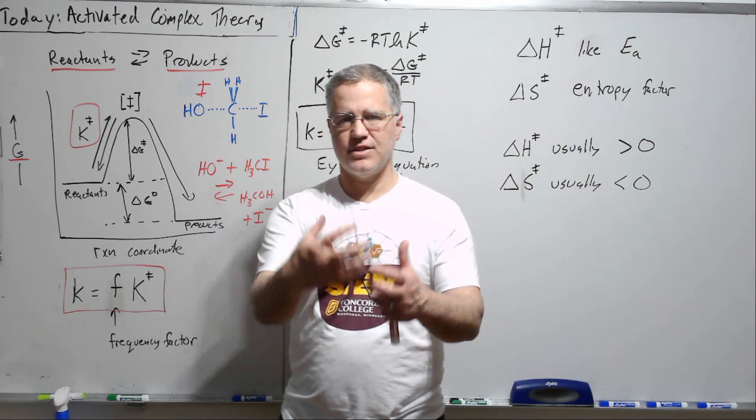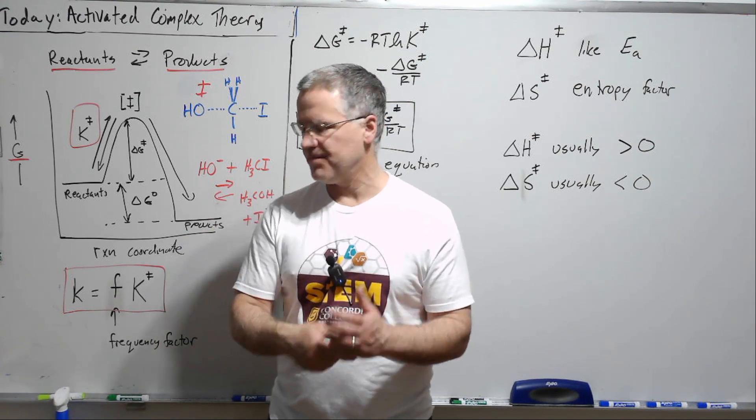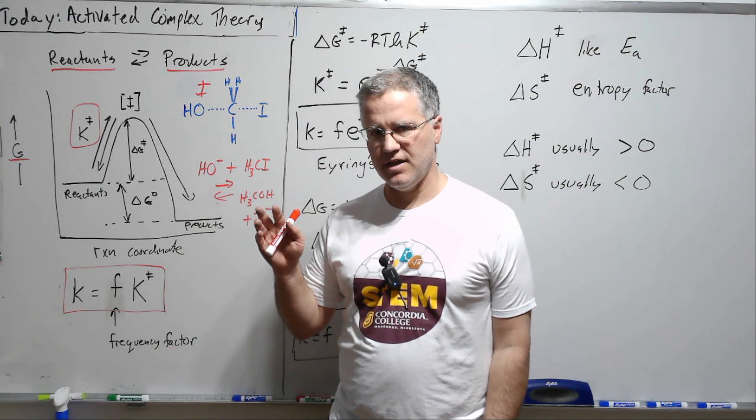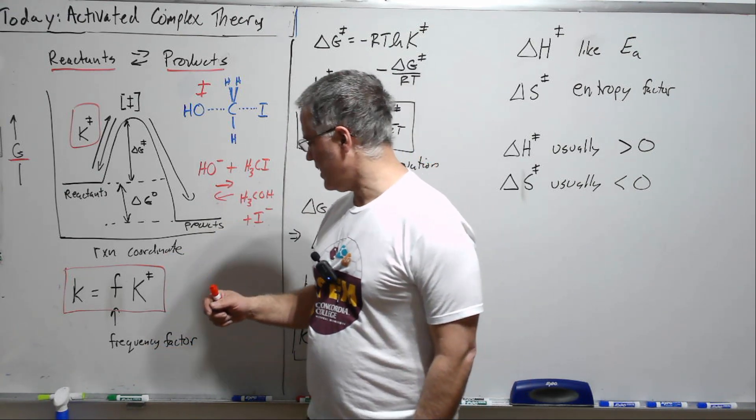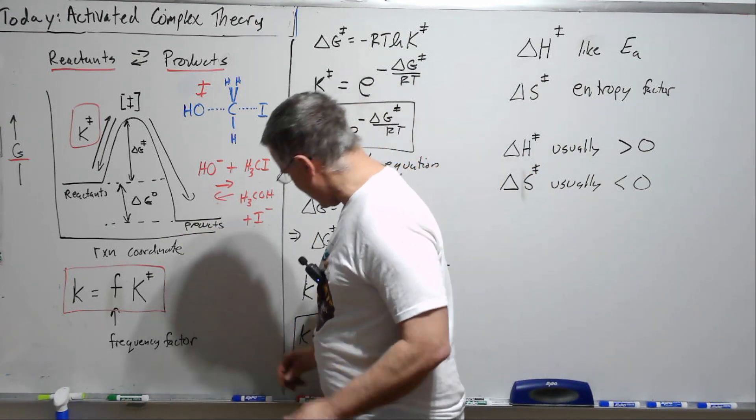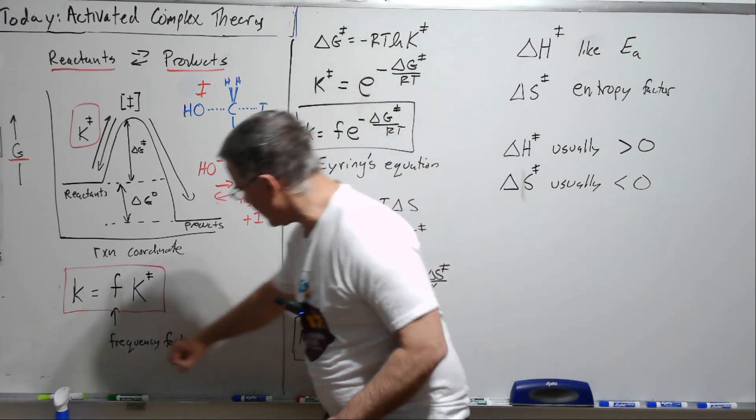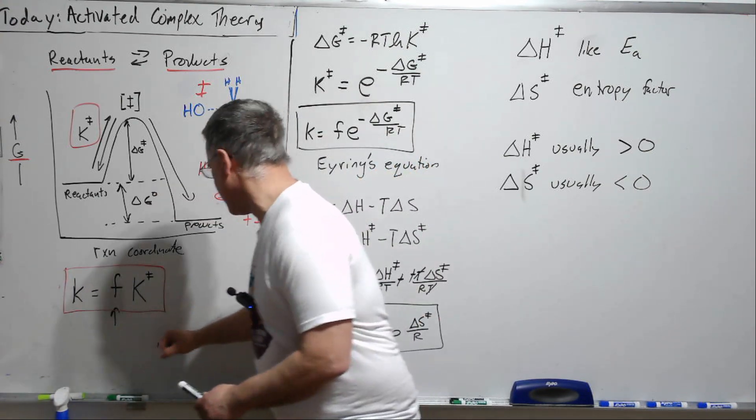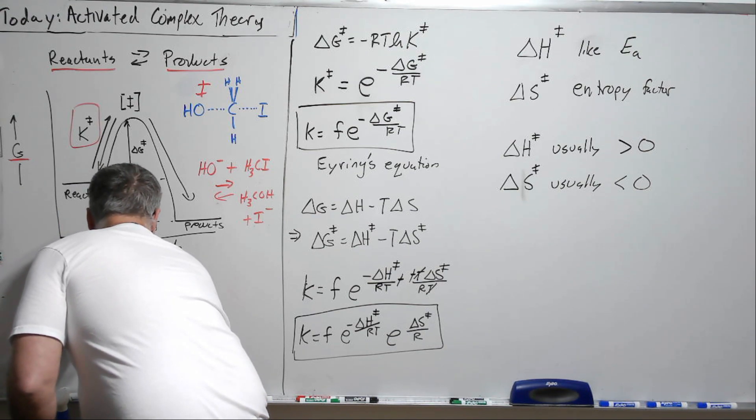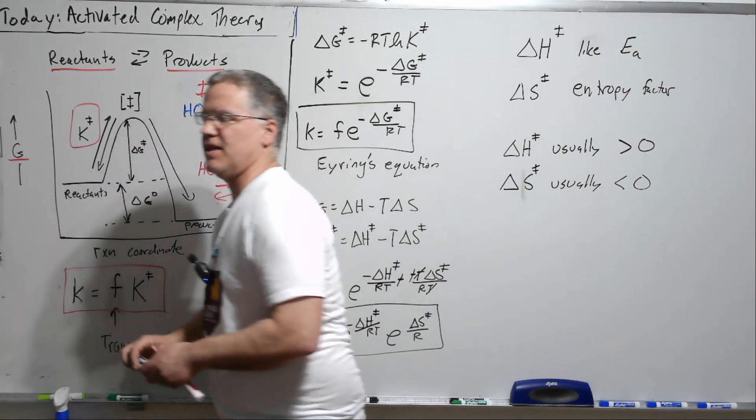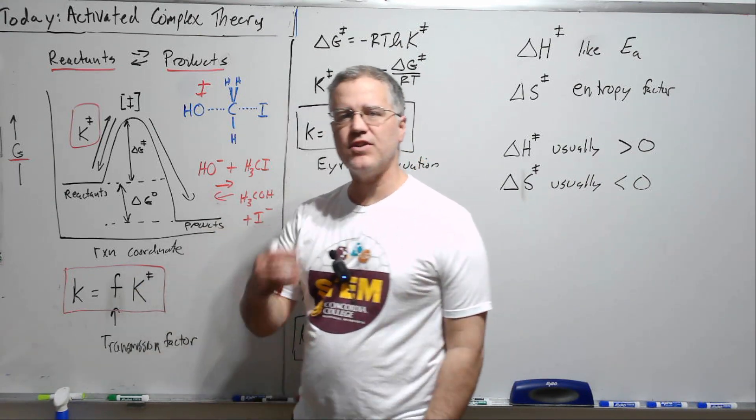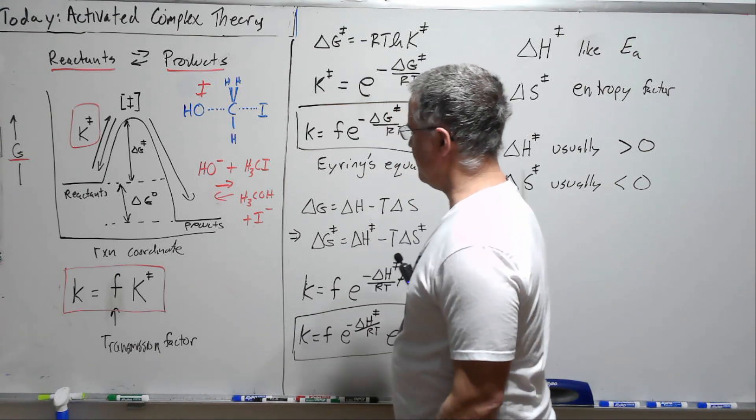And this again you can think of it sort of as this fudge factor similar to the Arrhenius equation A. The Arrhenius equation A, oh actually sorry, I've got a mistake here. This is called the transmission factor. The Arrhenius A is the frequency factor. It's called the transmission factor but it's very similar to the frequency factor.